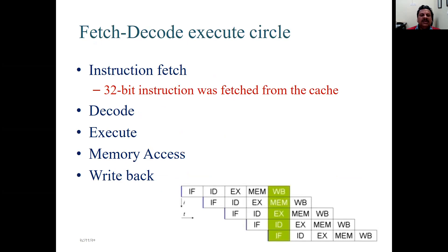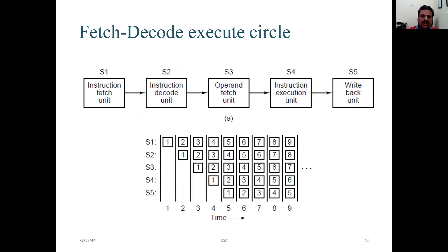Then you have fetch-decode-execute cycle. Fetch, decode, execute cycle. You have instruction fetch, 32-byte instruction was fetched from the cache. Decode, execute, memory access, write back. Now here is the fetch, decode, execute cycle. That is the instruction fetch unit moves to instruction decode unit, then to operand fetch unit, instruction execution unit, write back unit and the blocks or address notation. So the operations of those working is also being depicted here.